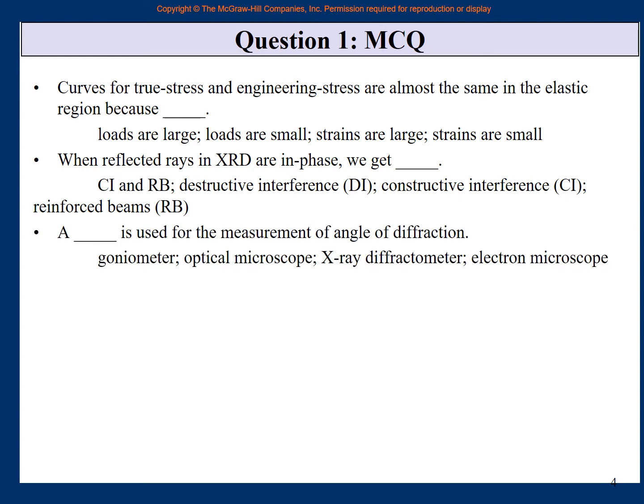A dash is used for the measurement of angle of diffraction. A very simple thing, goniometer, optical microscope, X-ray diffractometer, electron microscope. So if you had studied your X-ray diffractometer, then the small device inside the X-ray diffractometer, which measures the angle of diffraction, is called the goniometer.